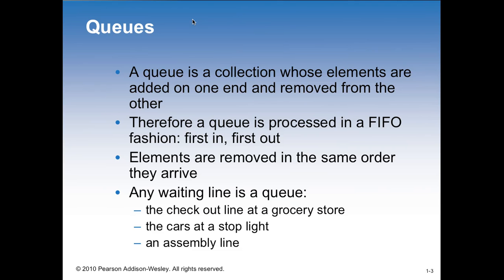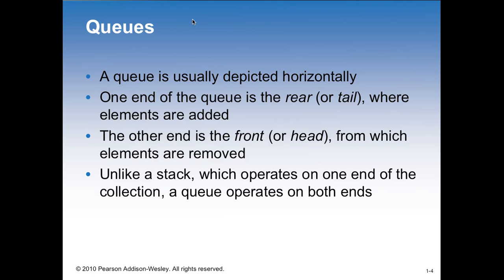I always use the bank as an example. If you're the first one who showed up, you should be the first one who gets served. That's where the fairness comes into the queue. If you did a stack in that case, the people who showed up first would be pretty upset at everybody else - it wouldn't work in that application. So a queue is usually depicted horizontally by a straight line. Stacks go vertical, up and down. Queues go horizontal when we draw them out in pictures.